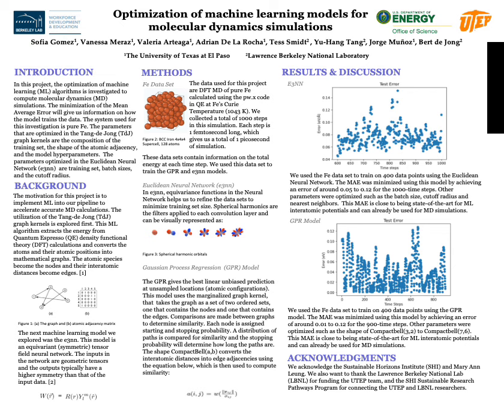For the methods used in this project: first, we used the BCC iron system to train our models, using a 4x4x4 supercell that contains 120 atoms. We also utilized Quantum ESPRESSO to calculate the energies and forces at iron's Curie temperature of 1043 Kelvin.